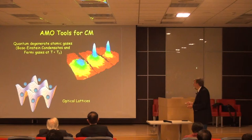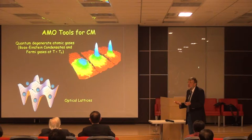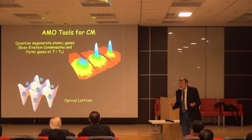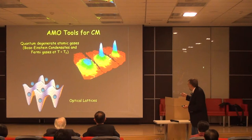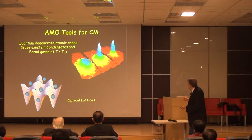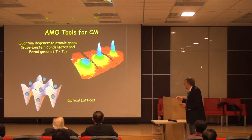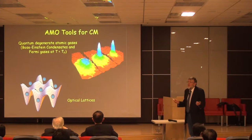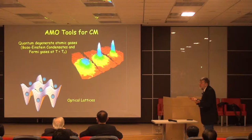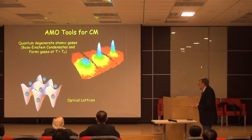The main tools from atomic, molecular, and optical physics for studying condensed matter problems are quantum degenerate gases — either Bose-Einstein condensates or degenerate Fermi gases. For bosons, when the thermal de Broglie wavelength is approximately equal to the inter-particle spacing, the gas condenses into a BEC, as Einstein showed around 1924, with a large fraction of atoms in the motional ground state. For fermions, there's no phase transition, but the gas becomes quantum degenerate similarly to how electrons in metals form a degenerate Fermi gas.